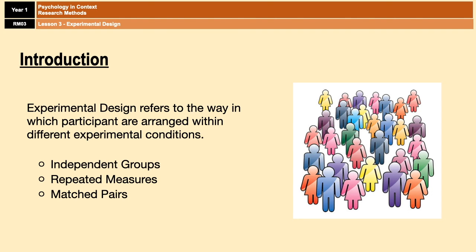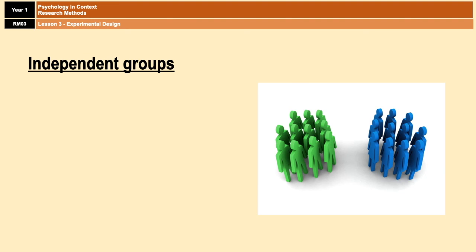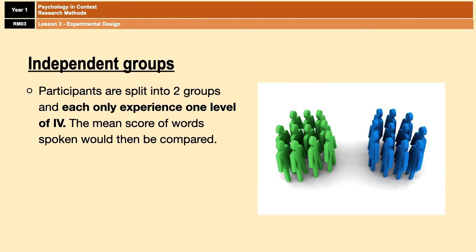I'm now going to go through how each of them works, and then we'll look at a couple of evaluation points for each. The first design is independent groups. In this design, participants are split into groups independent from each other — hence the name. Each group experiences one level of the IV. If there are only two levels, the experimental and the control condition, then there are only two groups.